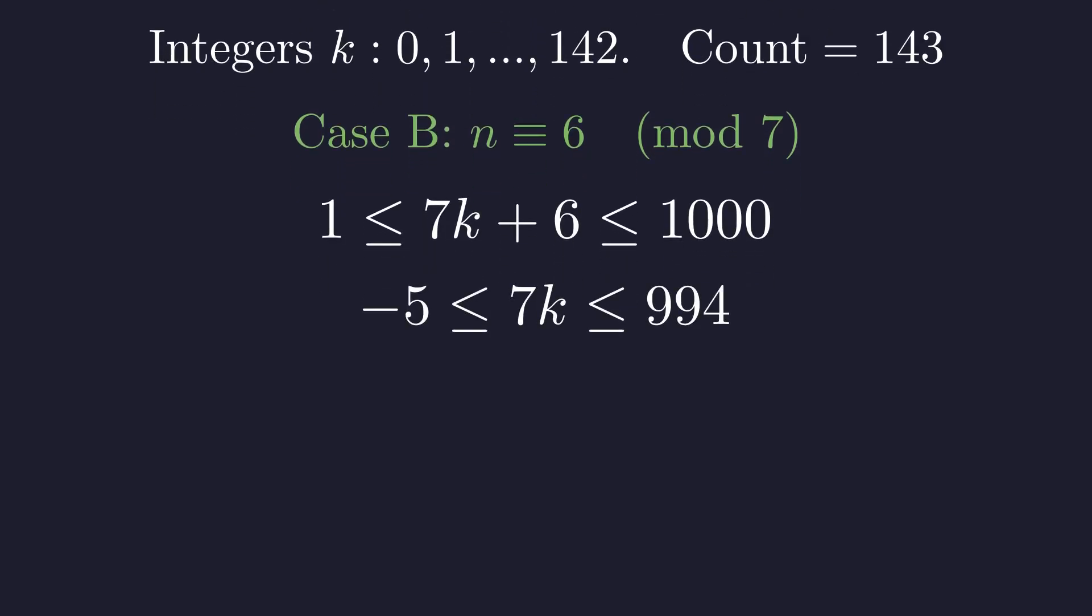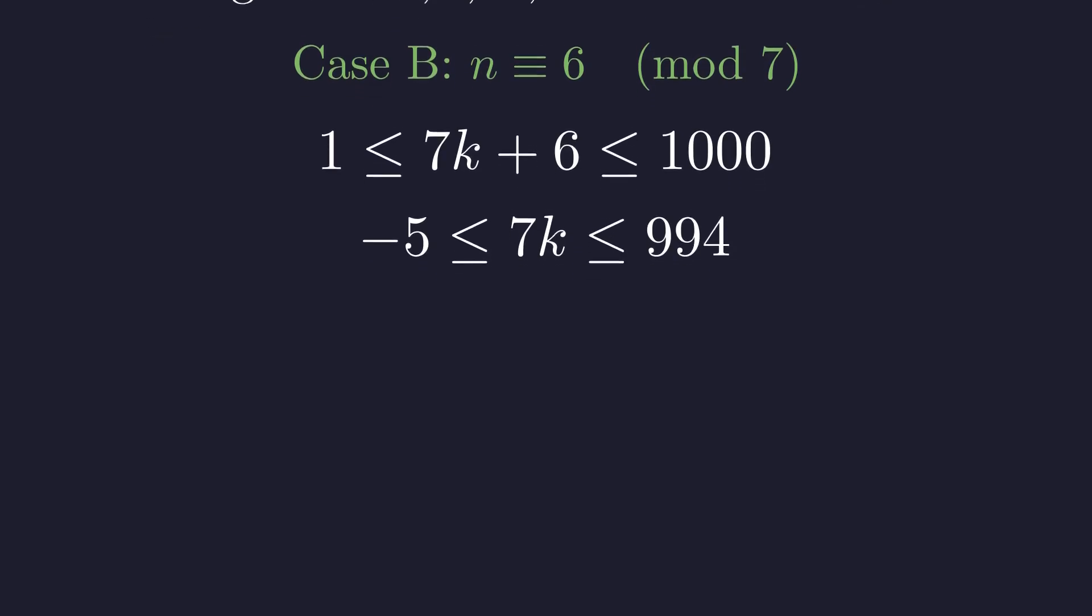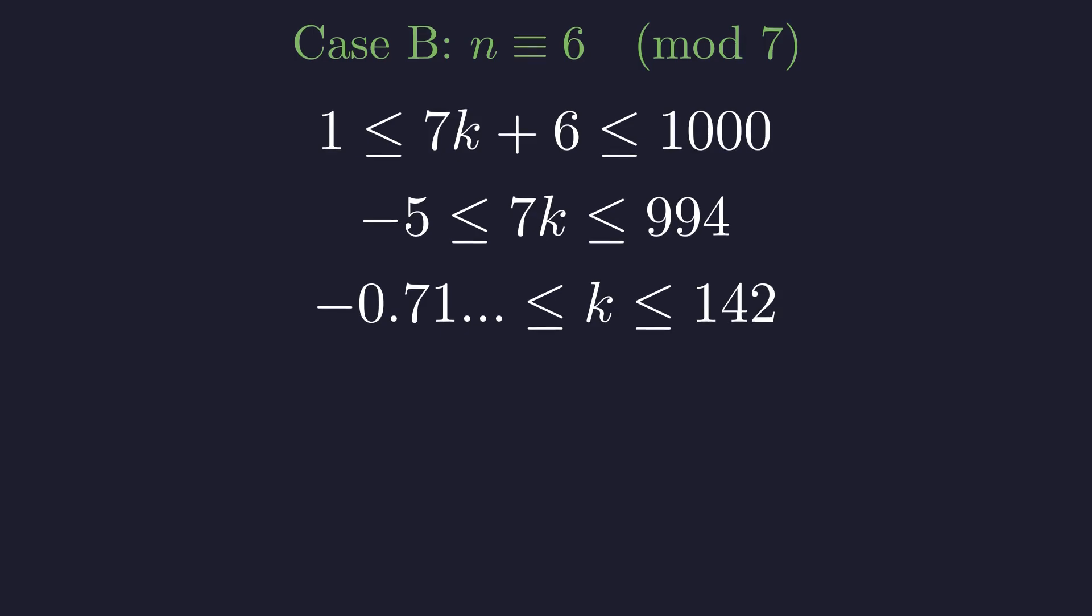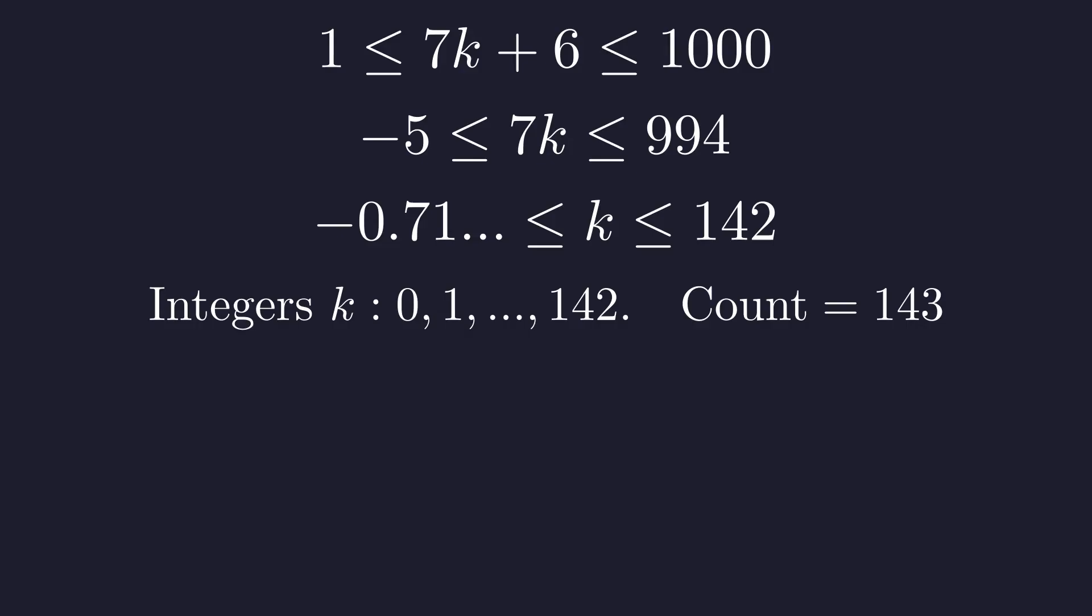Subtracting 6 from all parts and dividing by 7. Notice that 994 divided by 7 is exactly 142. Again, the values for k range from 0 to 142, giving us another 143 solutions.